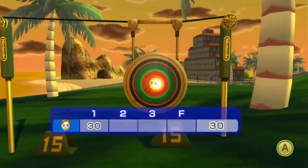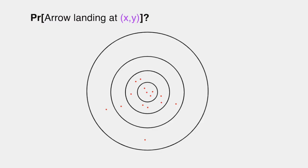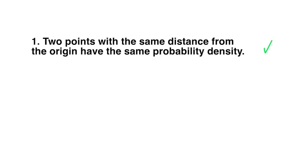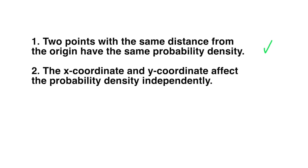Let's say we're an archer with a bow and arrow trying to aim at a bullseye. Our goal is to find a function that describes the probability density of each point around the circle. We're going to assume that because the board is a circle, it doesn't matter in which direction we miss — it just matters how far away from the bullseye we are, and that ring should have the same probability density throughout. Additionally, we're going to assume that it doesn't matter if you miss in the x direction or the y direction — these are completely independent random variables.